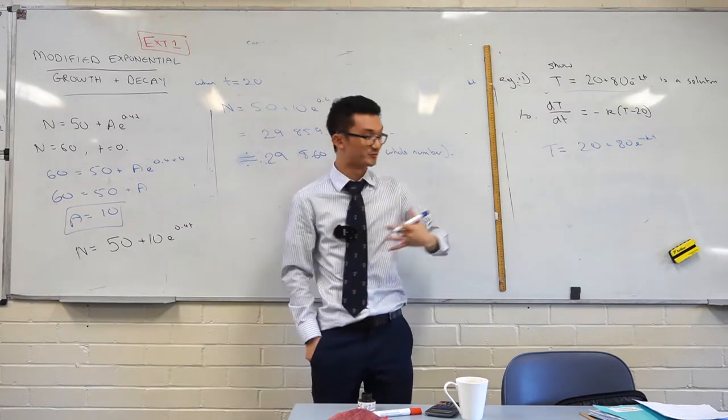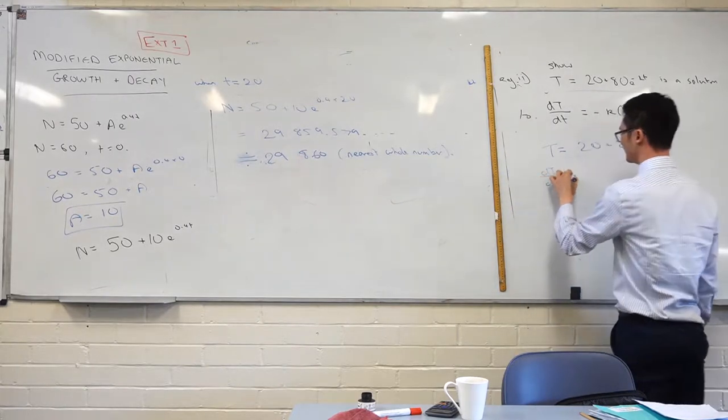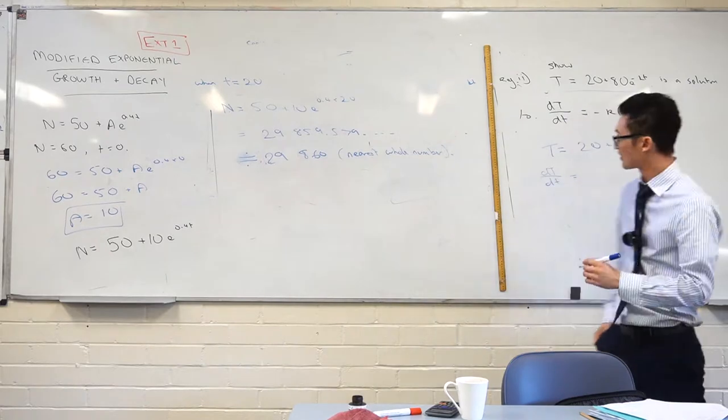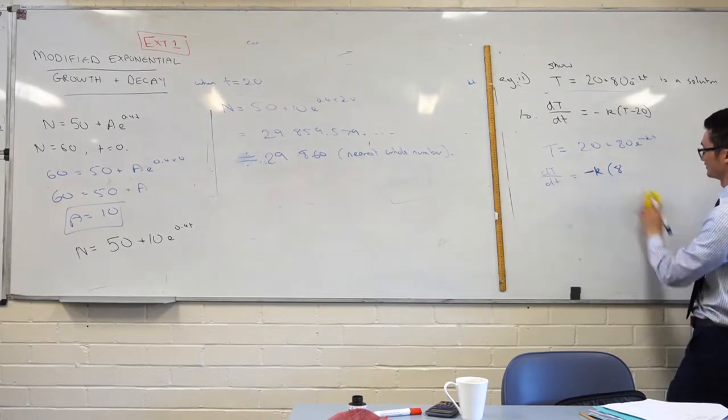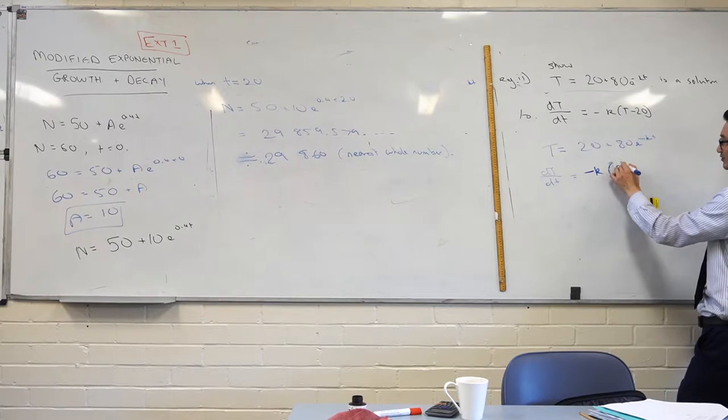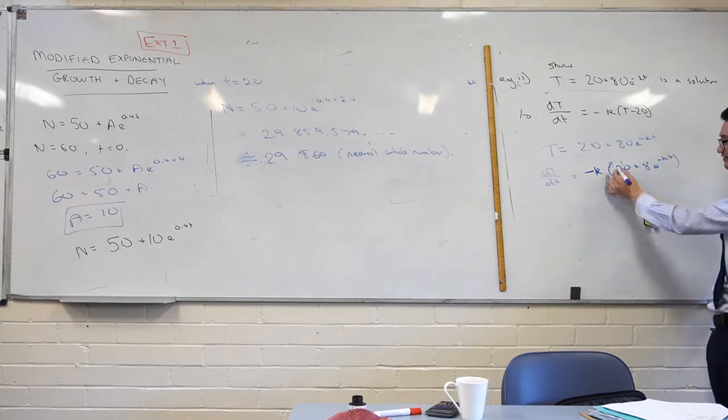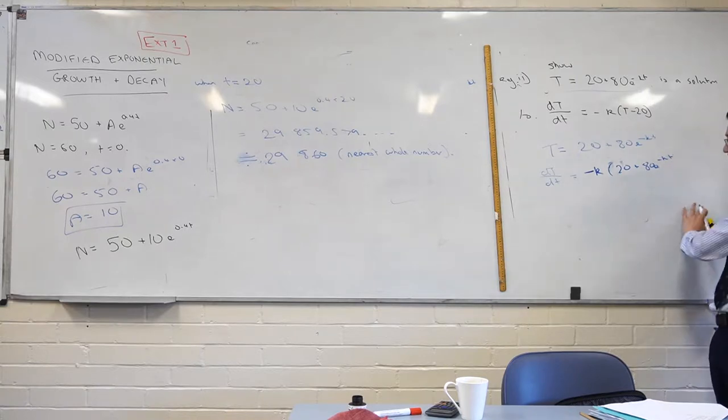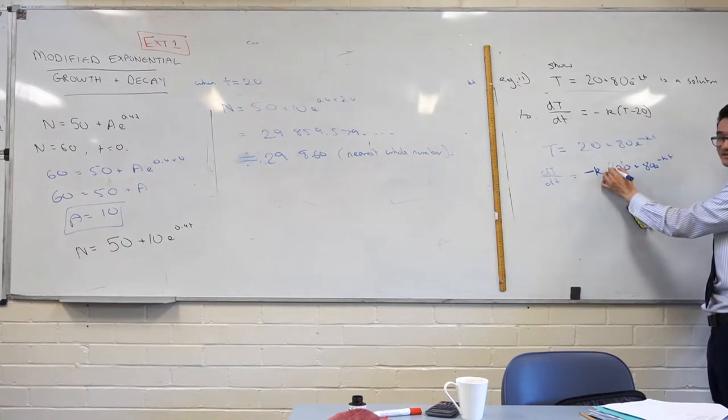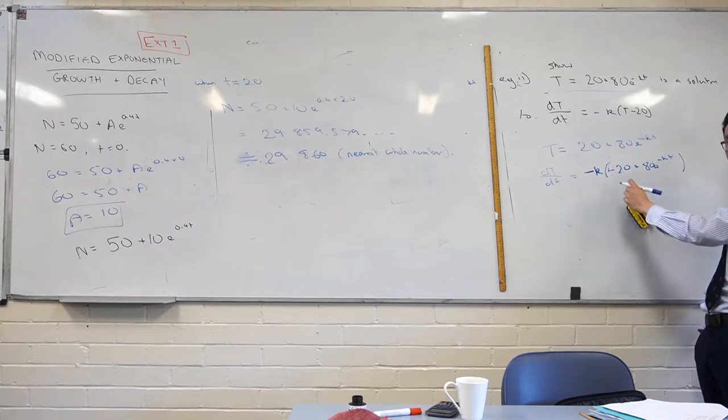So what are we differentiating with respect to? Well we have a capital T, we're differentiating with respect to little t here. Be careful of any negatives of how that's going to affect your derivative, right? So you want 20 plus 80e to the negative kt? Minus 20. Are we in?